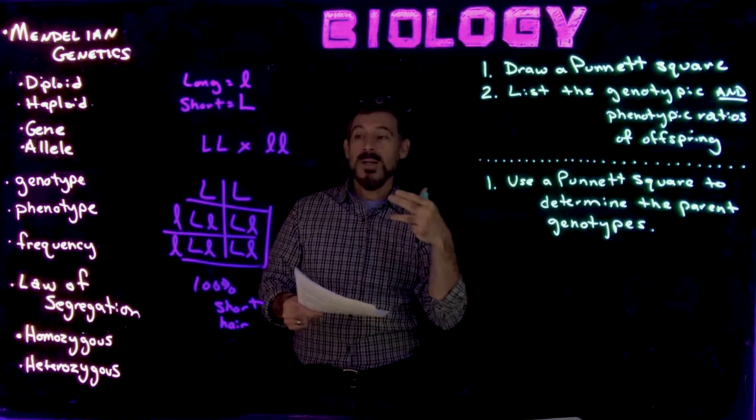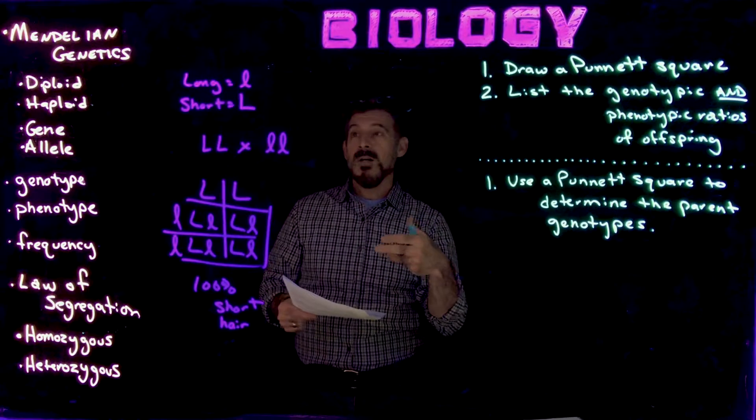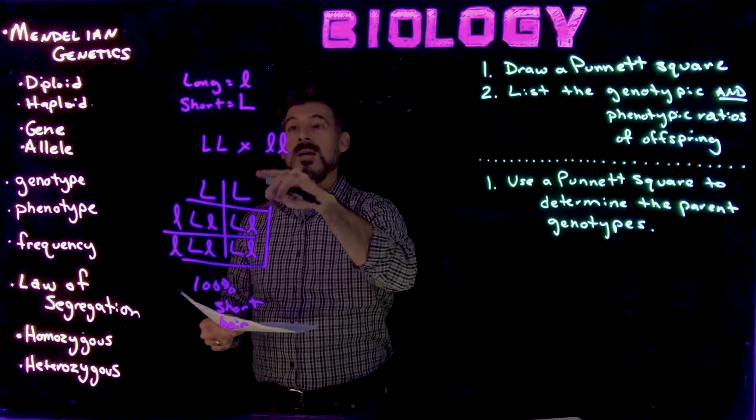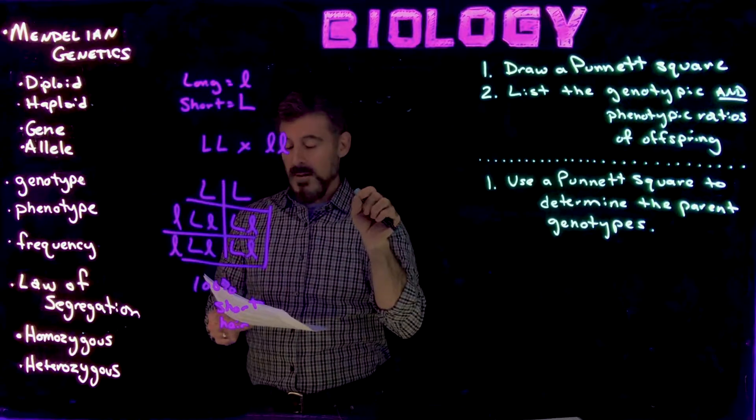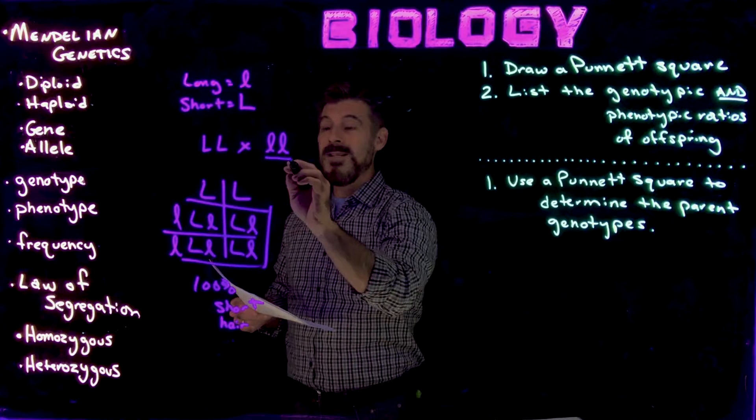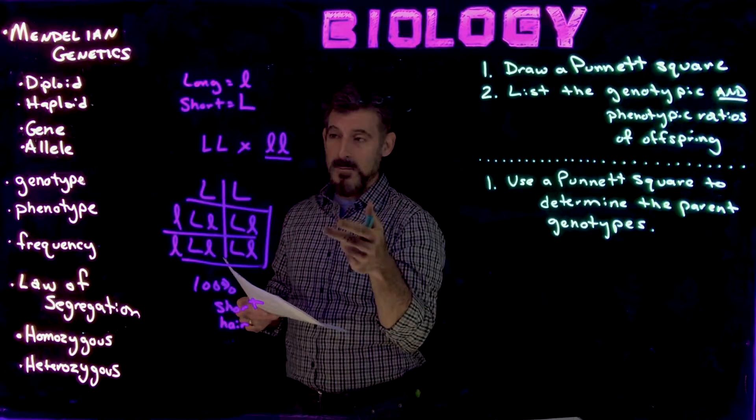So as you read the problem, you need to make a note of what the symbol should be. Homozygous recessive is one that's going to be easy to know the genotype for.